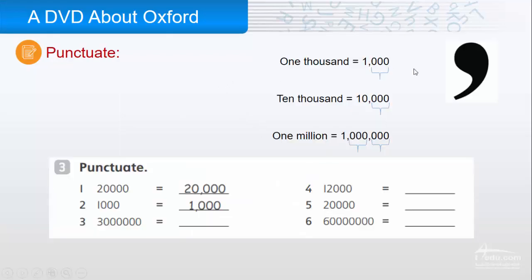How do we write a number? We write numbers using the comma. One thousand. We count. One, two, three, comma. Ten thousand. One, two, three. One million. One, two, three, comma. One, two, three, comma.